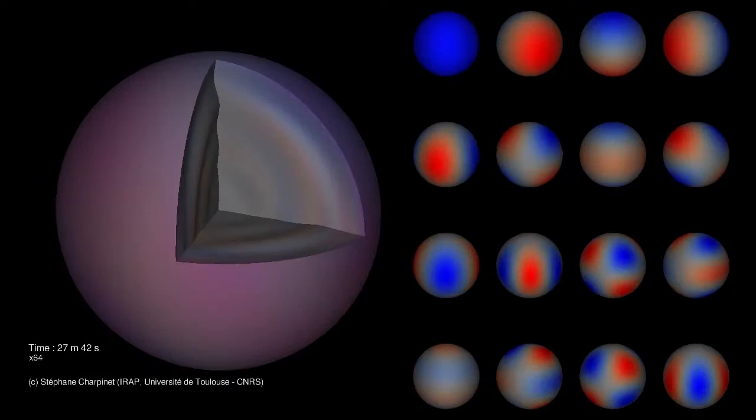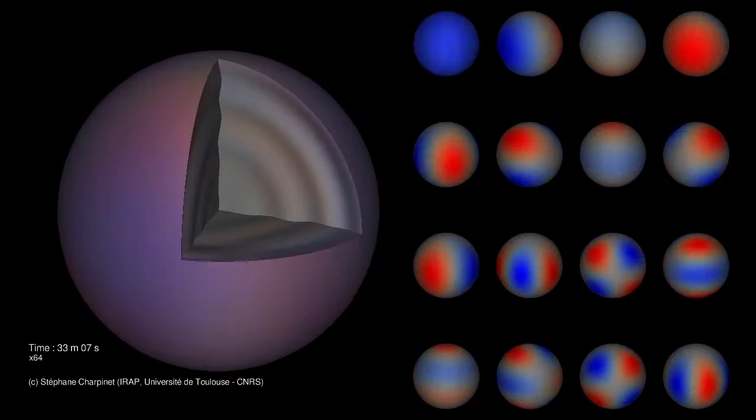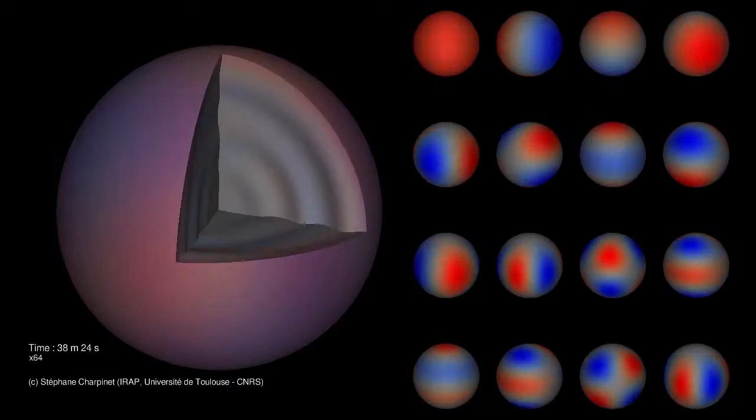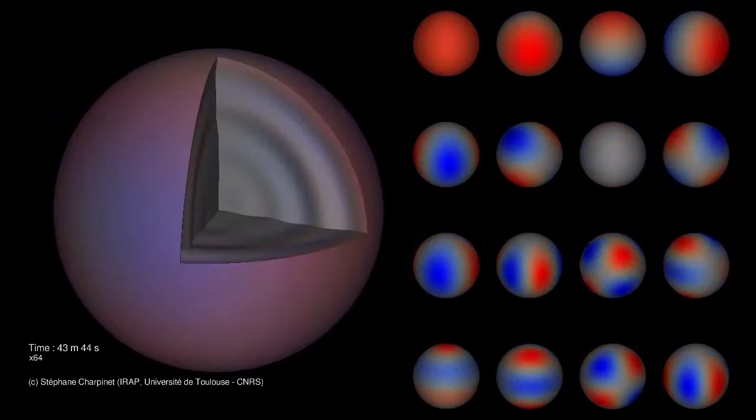Namely, the first one, L, is the degree of the mode. It is the total number of node lines. The second one, M, is the azimuthal order of the mode, telling us how many of the node lines are in longitude, dissecting the star into sectors.